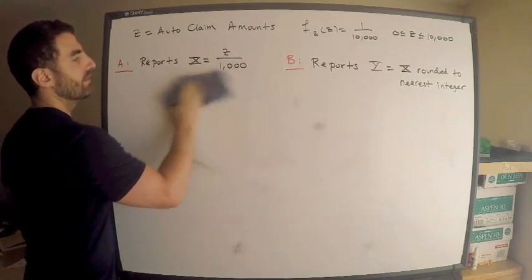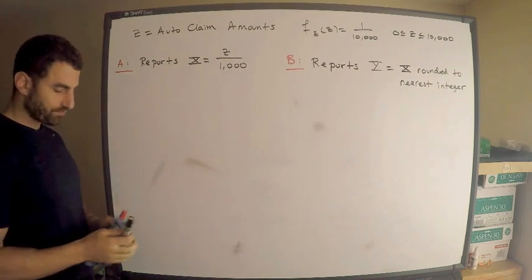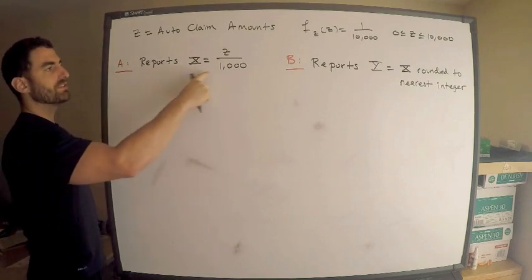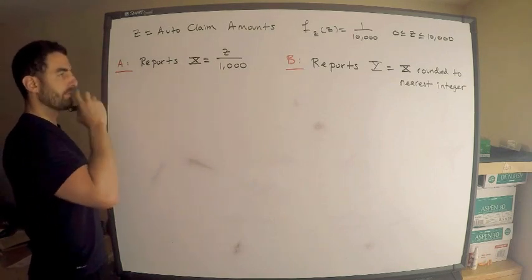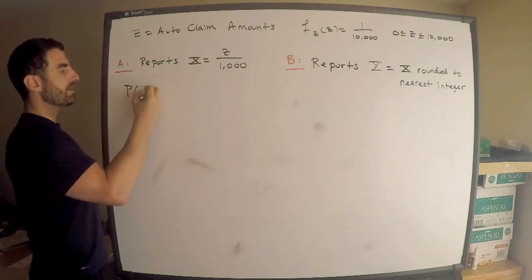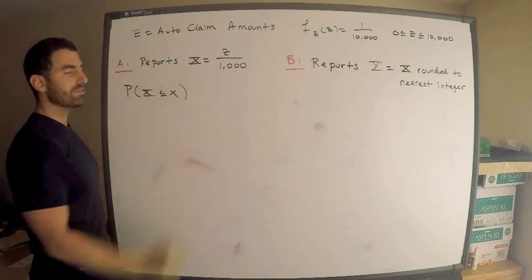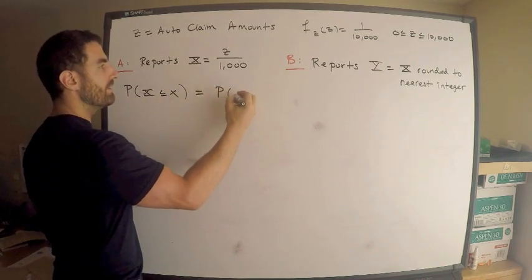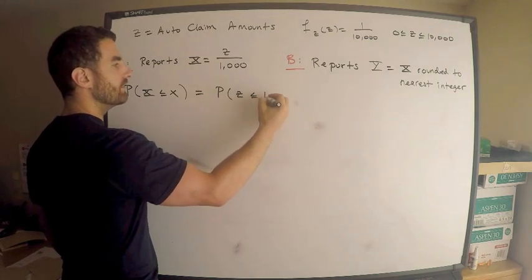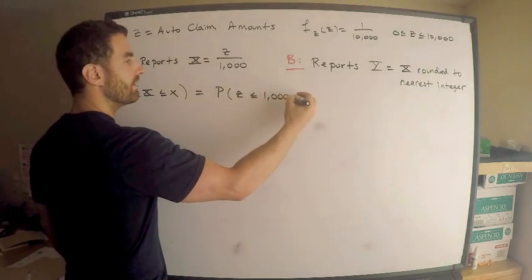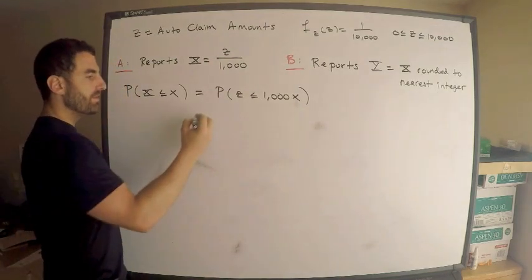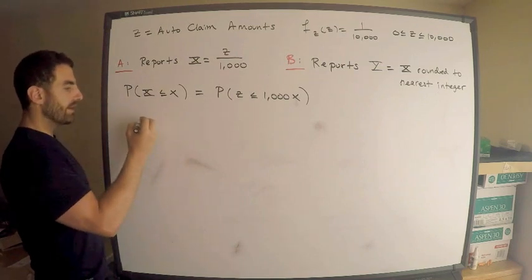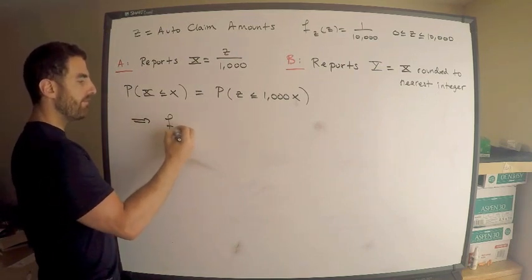First, I need to find the density function of X. So the probability that X is less than or equal to x — this is the CDF — equals the probability that Z is less than or equal to 1,000x. Therefore, F of x (the CDF of X) equals the CDF of Z evaluated at 1,000x.